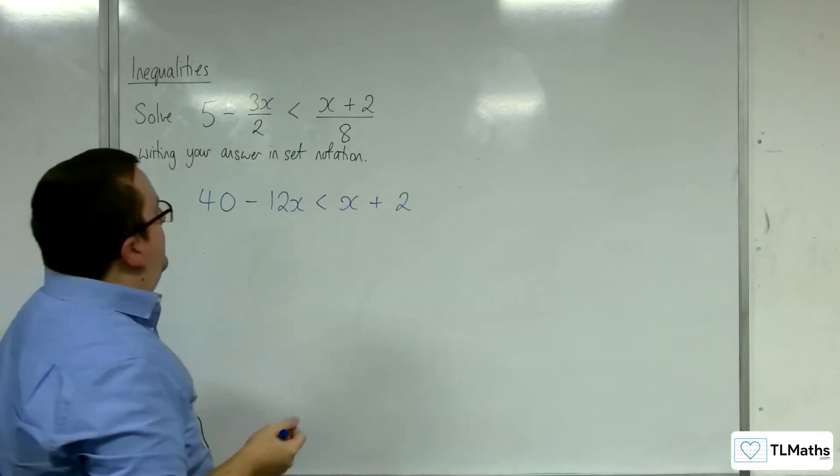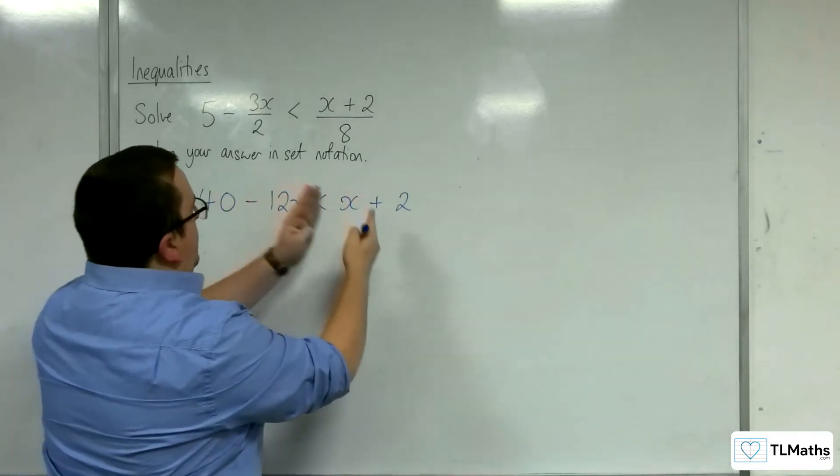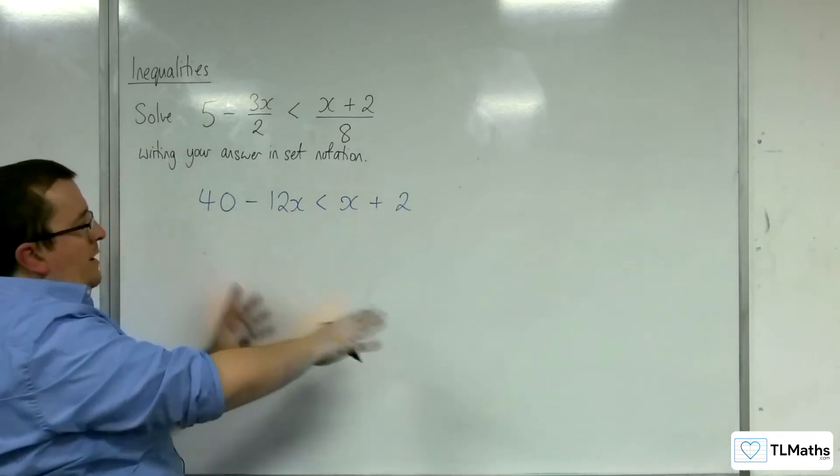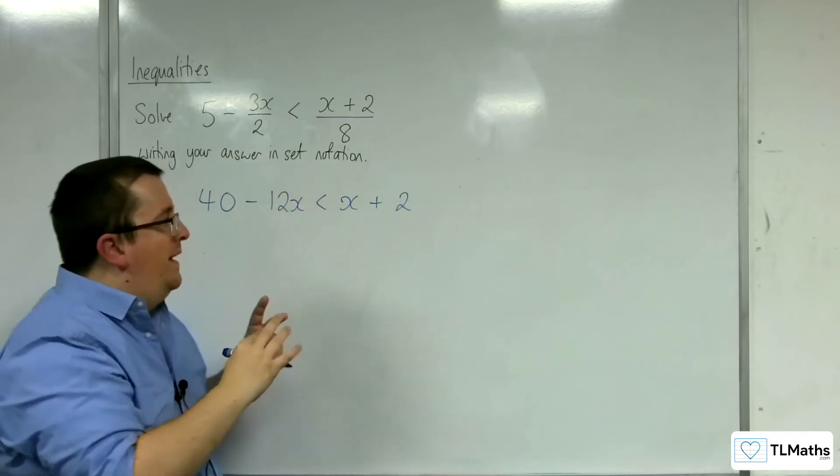What I'm going to do is add the 12x to the other side. I mean, I could subtract 40 from both sides, take x from both sides, and do it that way.